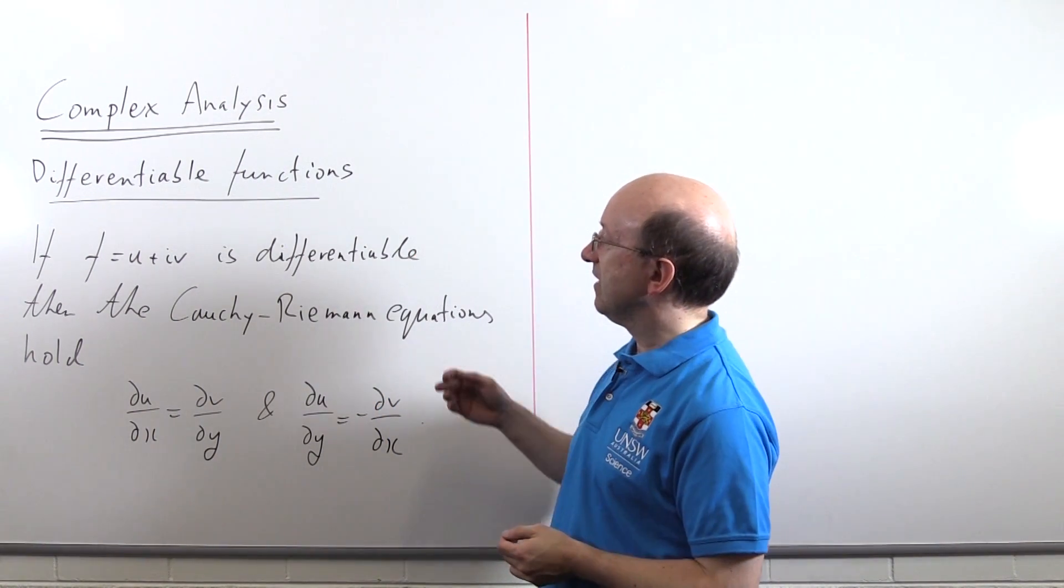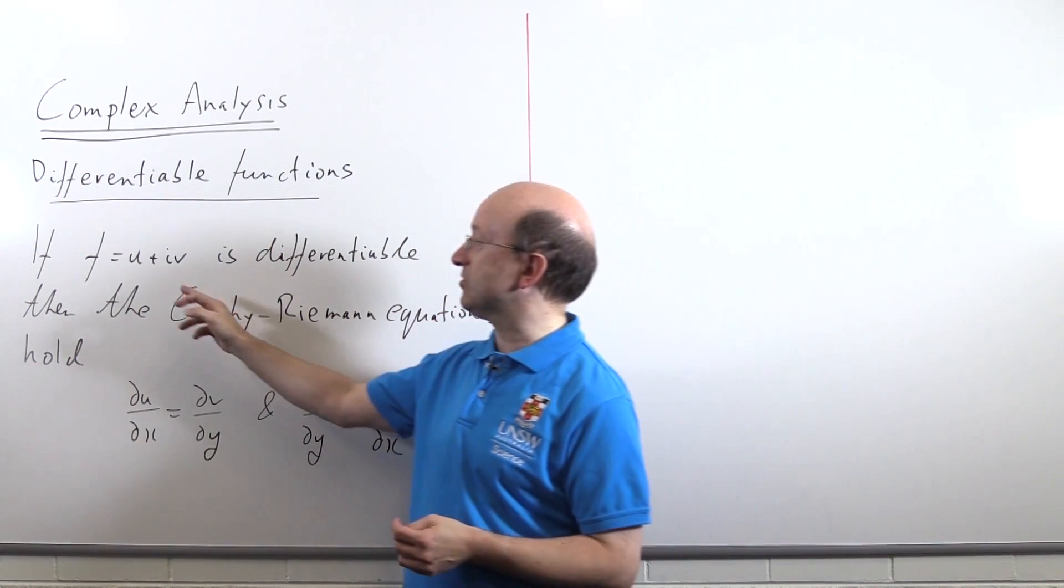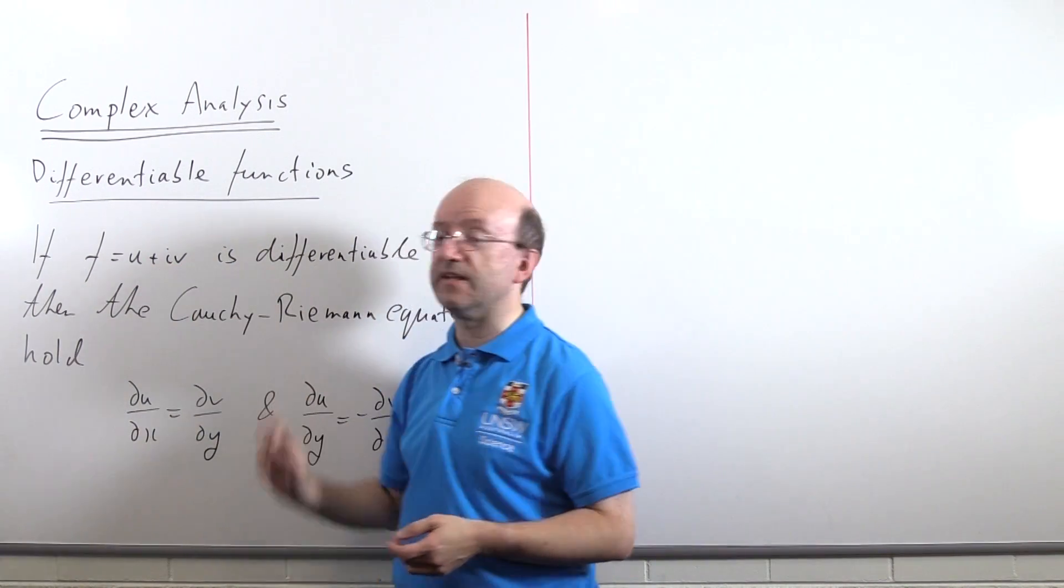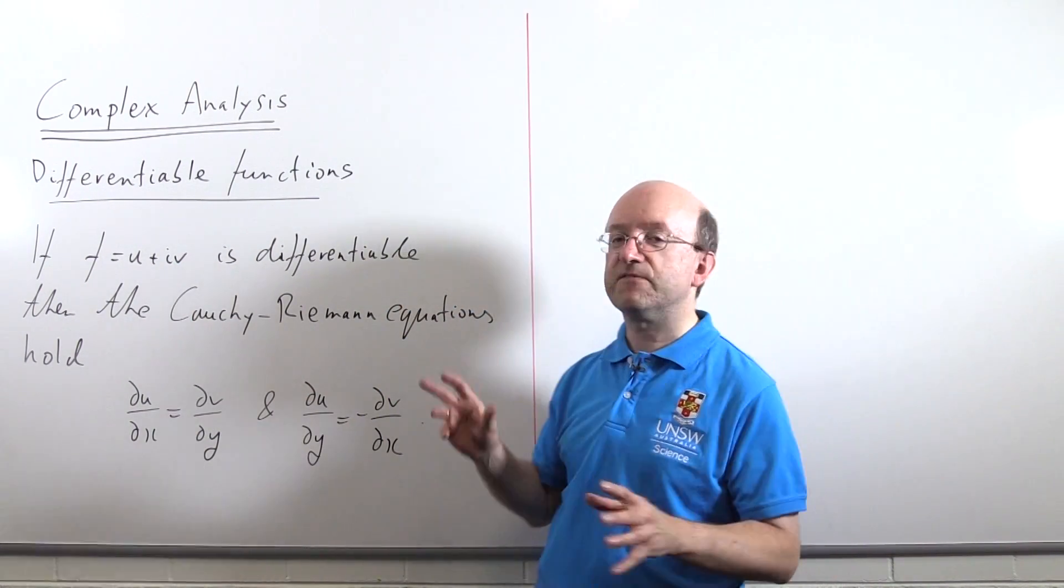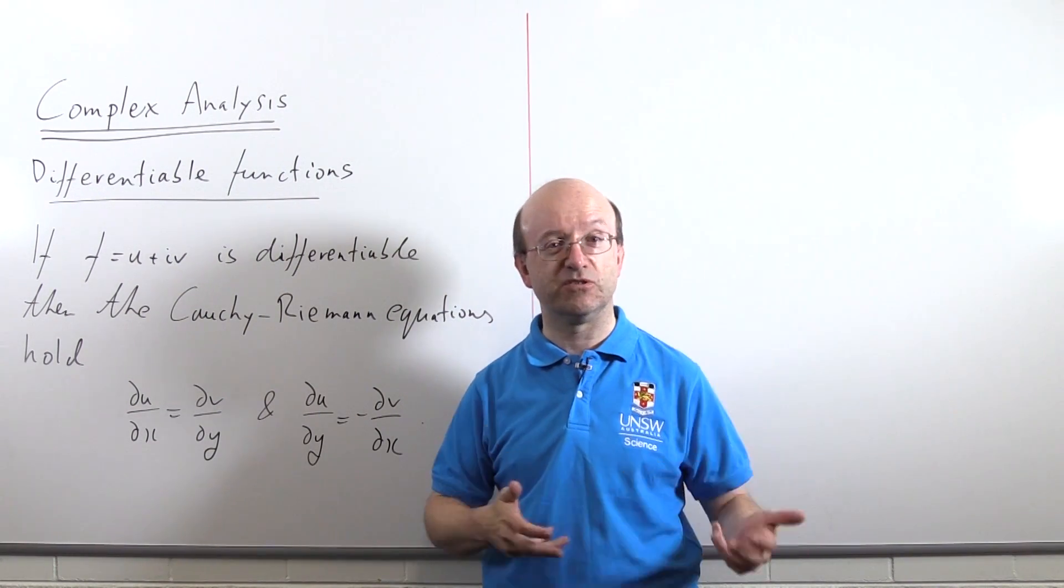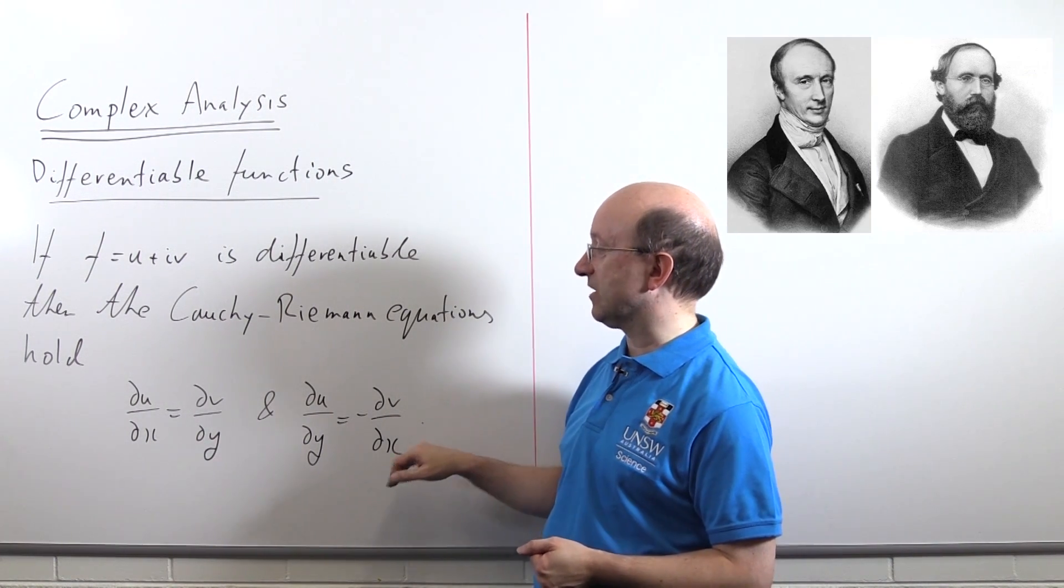First and briefly, if we've got a complex function from the complex numbers, which we typically write as u plus iv, so u is the real and v the imaginary part of f, then if the function is differentiable, which essentially has the same meaning in complex functions as it does for real, then these two equations hold, known as the Cauchy-Riemann equations.